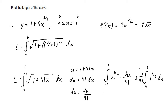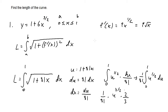Evaluating the integral, we have 1 over 81 times the integral of u to the 1 half, which gives u to the 3 halves divided by 3 halves, or multiplied by 2 thirds. So 1 over 81 times 2 thirds equals 2 over 243, times u to the 3 halves. Substituting back, u becomes 1 plus 81x, giving us 2 over 243 times (1 plus 81x) to the 3 halves power.